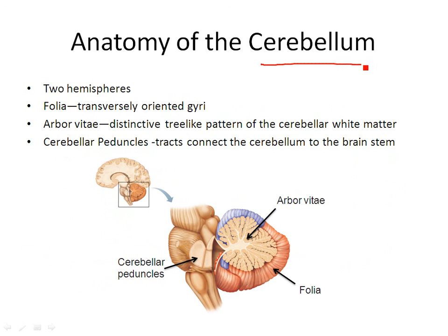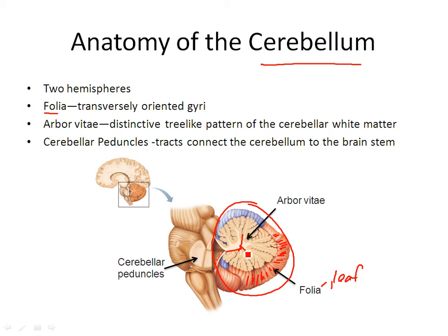The last part of the brain is the cerebellum — this area hanging down below the cerebrum and behind the brain stem. It has two hemispheres just like the cerebrum, and it has what are called folia, which means leaf — like a page of a book. When you do the sheep brain dissection, you'll see these little thin leaves of the cerebellum. You have the arbor vitae — meaning tree of life — which is the white matter you can see in the pattern. The gray matter is on the outside, and the cerebellar peduncles are tracts that connect the cerebellum to the brain stem.